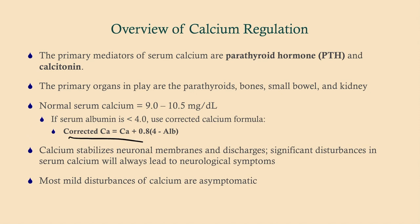This is the corrected calcium. If you have a patient with hypoalbuminemia — low albumin — which you can see in patients with nephrotic syndrome or liver failure, their serum calcium may not be exactly representative of their overall calcium level, because calcium and albumin bind together. You can use the corrected calcium formula or just get an ionized calcium, which will measure the free calcium in the serum. Remember that calcium stabilizes neuronal membranes, and most mild disturbances of calcium are indeed asymptomatic.